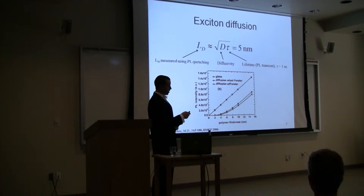It can be approximated in the ideal sense as going as the square root of diffusivity times the lifetime of the exciton. It's typically around 5 nanometers for most polymer systems that we'll be talking about.